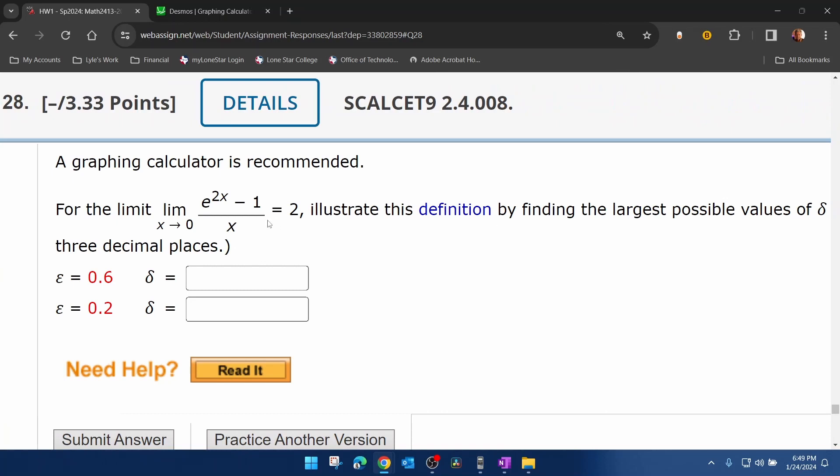So here's what we're going to do with our graphing calculator. We're going to graph this function. Look at what happens as x approaches 0. We should see that it reaches a height of 2, but then we're going to find the values of delta that allow us to stay within 0.6 units of 2, and then within 0.2 units of 2.